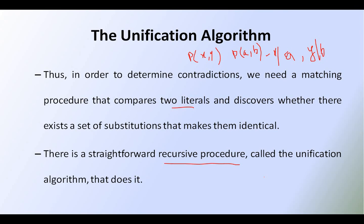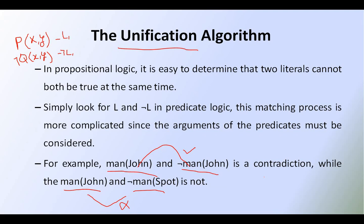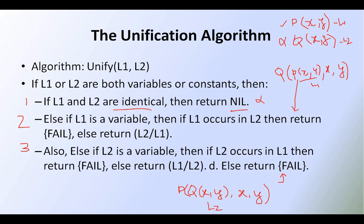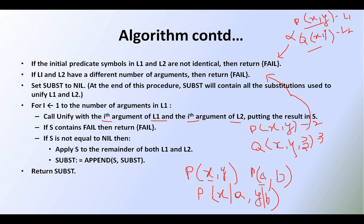This is the main motivation of the unification algorithm — it is used for matching purposes. Two literals with the same name and same number of arguments can be unified; the arguments must differ like P of X comma Y and P of A comma B. The ith element of one literal unifies with the ith element of another. This is the unification algorithm. If you have any doubts, tell me in the comment section, and please subscribe to Intelligible Tutorials. Thank you.